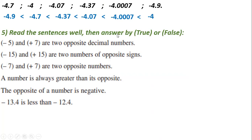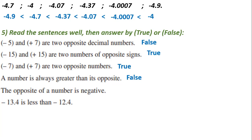Now answer true or false. 'Minus 5 and plus 7 are two opposite numbers' — false, they have different numbers. 'Minus 15 and plus 15 are two numbers of opposite signs' — true. 'Minus 7 and plus 7 are two opposite numbers' — true, same number different signs. 'A number is always greater than its opposite' — false, because the opposite of a positive is negative, making it smaller. 'The opposite of a number is always negative' — false, since the opposite of a negative is positive. 'Minus 13.4 is less than minus 12.4 since minus 13.4 is farther from zero' — true.